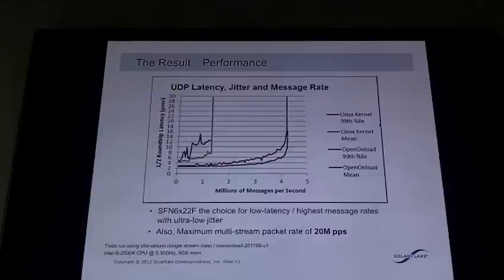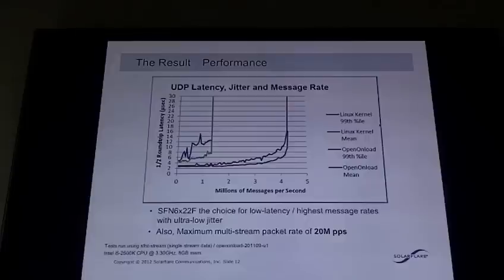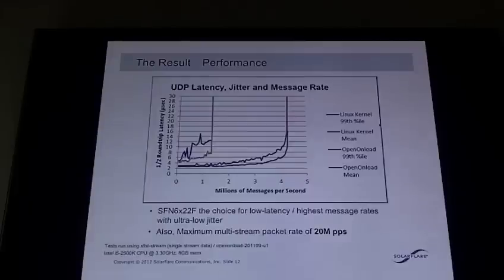From a performance perspective, this graph shows both kernel and Open Onload performance. The x-axis is millions of messages per second; the y-axis is half-round-trip latency. With Open Onload enabled, we get really low latency that stays flat out to very high message rates, and very low jitter. The blue line is average latency; the red line is 99th percentile latency. For our core customers in financial services and high-frequency trading, they care at least as much about what the slowest message is as about what the fastest message is. That jitter is a key aspect and one of the reasons we're so successful in the HFT space. By going to multi-streams, we can get up to 20 million packets per second on a contemporary Romley platform — essentially line rate.